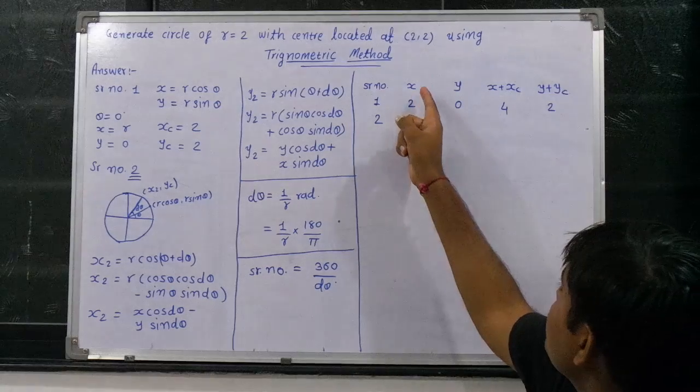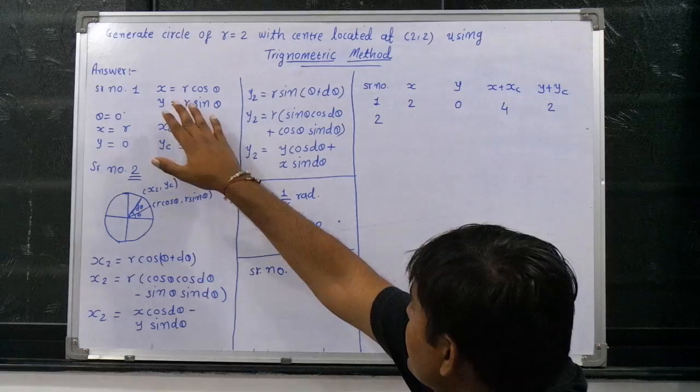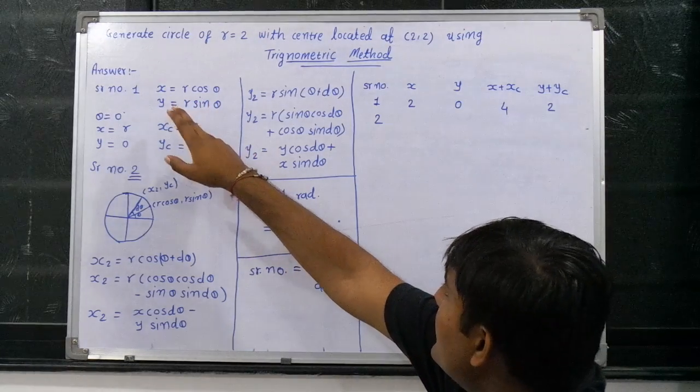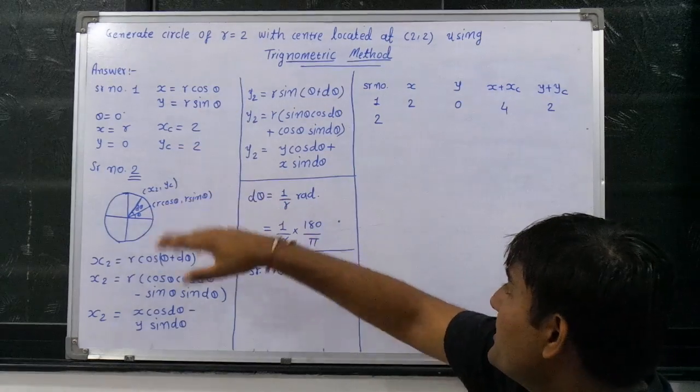So in order to find out the first iteration, the first serial number x and y value, what is the given formula? x is equal to r cos theta and y is equal to r sin theta.